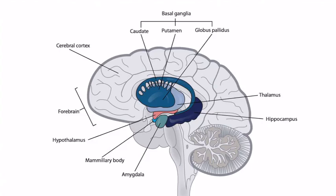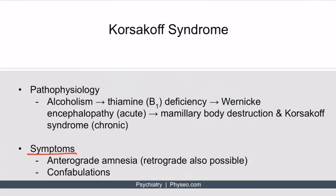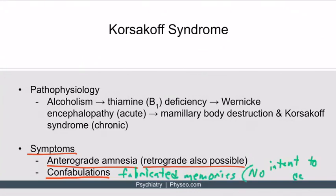An associated finding with Korsakoff syndrome is destruction of the mammillary bodies, which you can see on this diagram. They're part of the limbic system and are important for memory. Korsakoff syndrome is typically characterized by anterograde amnesia, although retrograde amnesia is also possible. Another common symptom is confabulations — fabricated or distorted memories created with no intention to deceive. Patients make things up because they can no longer remember what actually happened. For example, someone may claim they traveled to France last summer, though they've never been there.